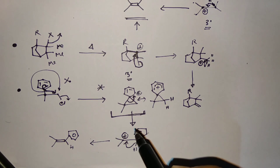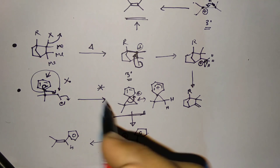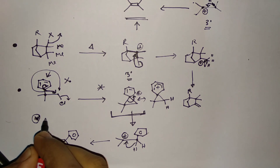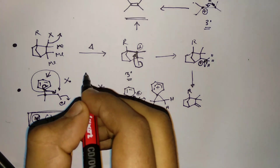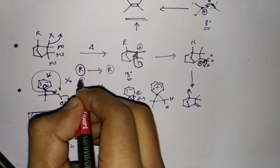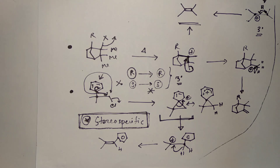Another important point: Wagner-Meerwein rearrangement is stereospecific. If you start with a starting material having R configuration, you will get the R product; if you start with S, you get the S product. No racemization occurs. This is all about Wagner-Meerwein rearrangement — check the blog link in the description for more details and examples.